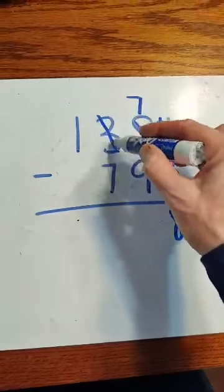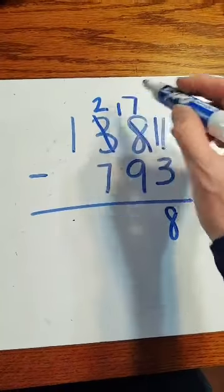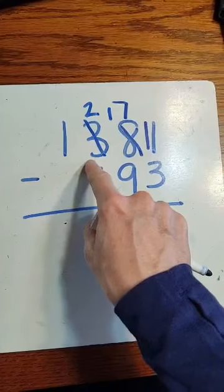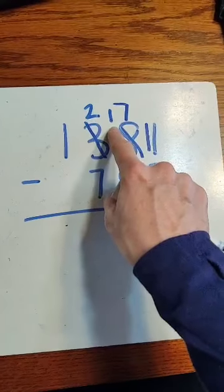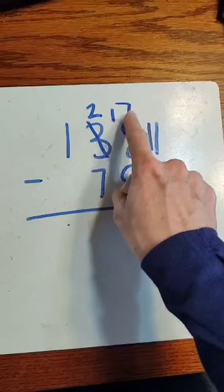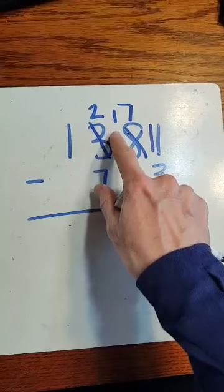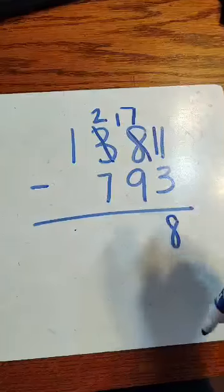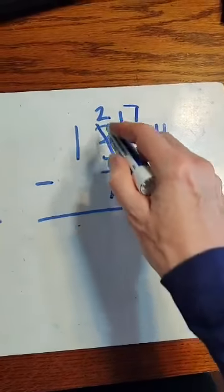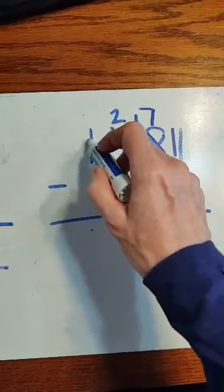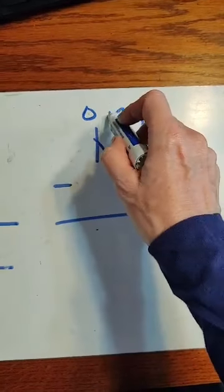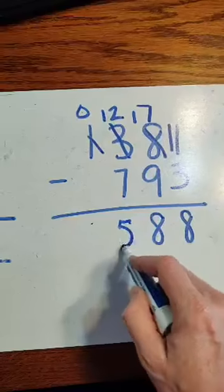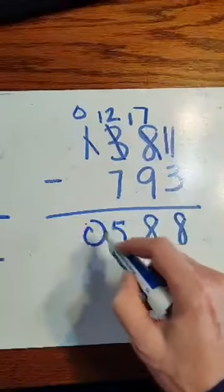Bigger bottom, better borrow. So notice what I'm doing is the number next to it is becoming 1 less and I'm giving a 10 or a 1 in front of my 1's place, in the 10's place. So it's a 10 to my number before that. 17 minus 9, 8. Bigger bottom. Again. 12 minus 7, 5, 0 minus 0, 0.